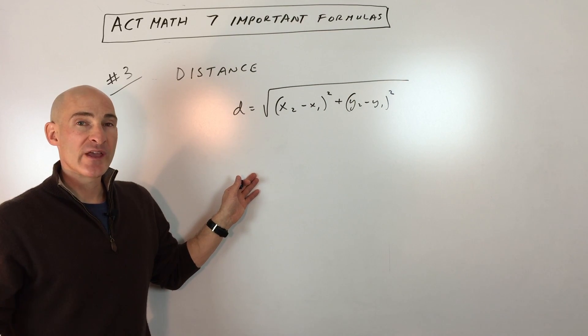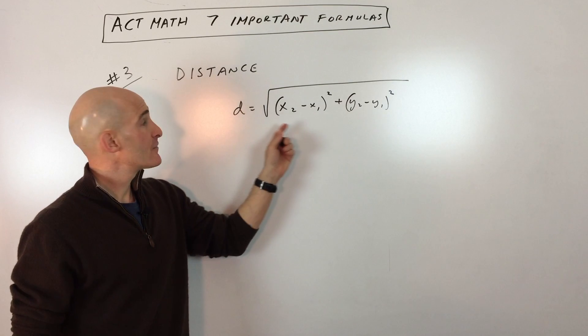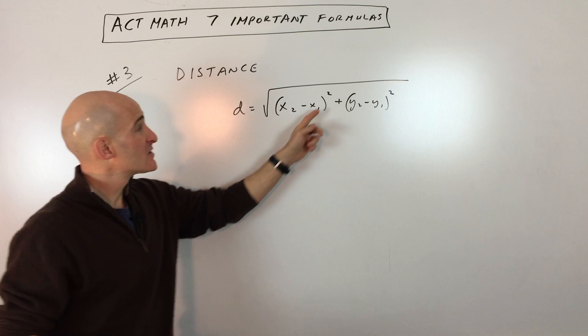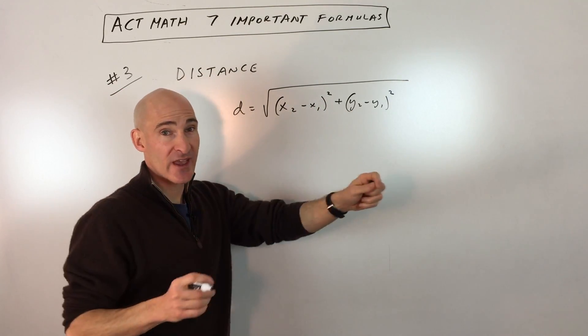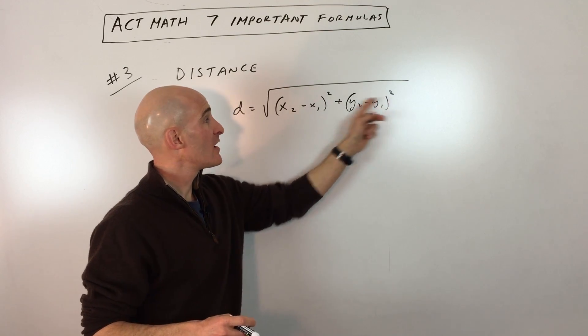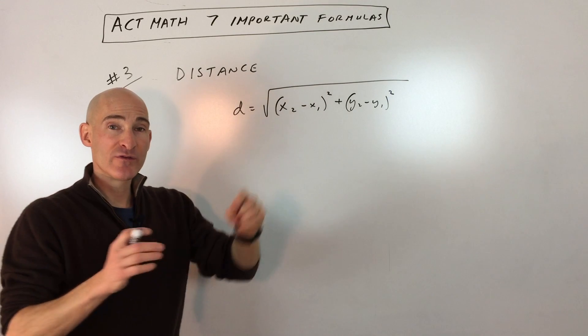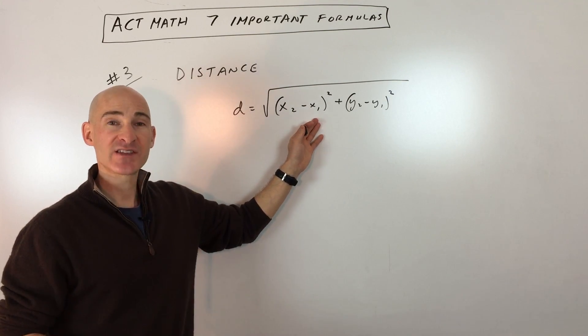The third formula we're looking at is the distance formula. So the distance formula is this right here. It's the difference between the two X coordinates of the points that you're trying to find the distance between squared plus the difference between the two Y coordinates of the points that you're looking at, the distance between squared. You add those quantities together and then you take the square root. And so that's how you would find the distance between two points. So another good formula to know for the math section of the ACT.